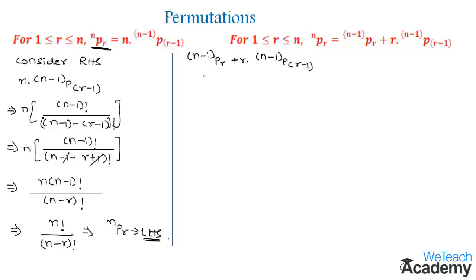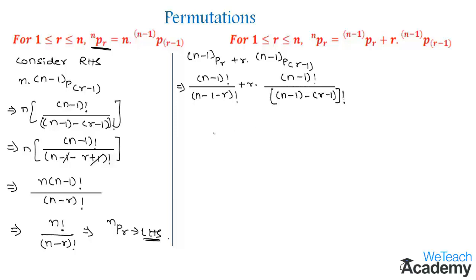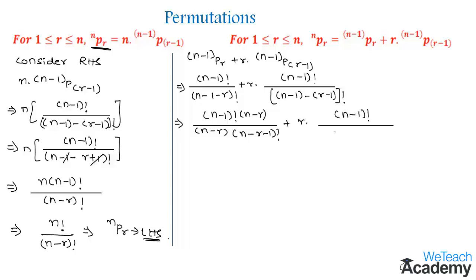Let us write this using the formula n!/(n-r)! where n is replaced by (n-1), giving (n-1)! divided by (n-r)!. For the first term, let us multiply and divide by (n-r), giving (n-1)! into (n-r) divided by (n-r) into (n-r)!, plus r into (n-1)! divided by (n-r)!. This simplifies to (n-r) into (n-1)! divided by (n-r)!.